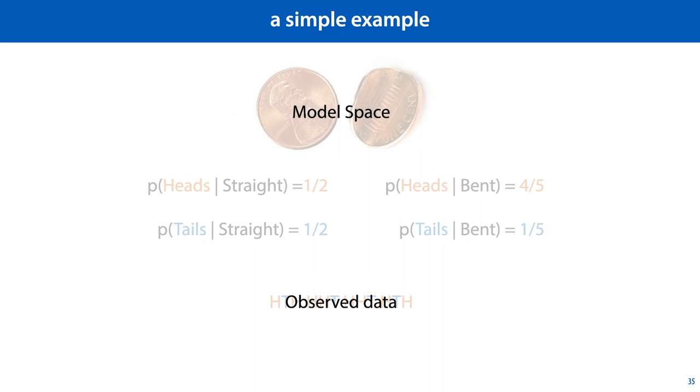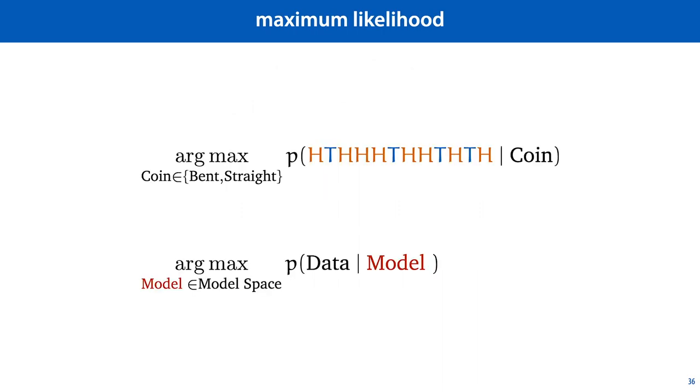We'll start with a frequentist approach. That is, we choose one of the models from our model space, which we think fits the data best. The maximum likelihood objective here tells us that we should choose the coin for which the probability of seeing this sequence is the most likely.